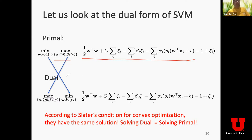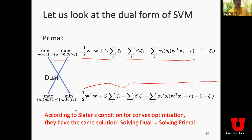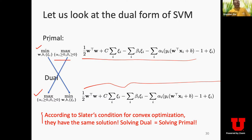Now let us look at the dual form. As mentioned, the dual form just switches the order of min and max. The objective function is still the Lagrange function. In the inner level, we minimize over w, b, and the slack variables ξ_i. In the outer level, we maximize over the Lagrange multipliers. According to Slater's condition for convex optimization, solving this dual problem is equivalent to solving the primal. Analyzing the dual form solution reveals interesting structure and paves the way to extend SVM to nonlinear classification.